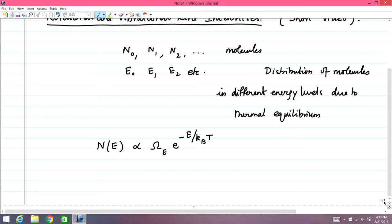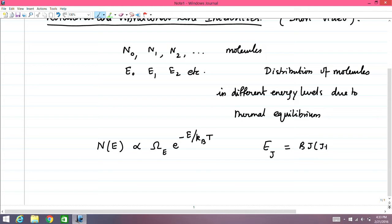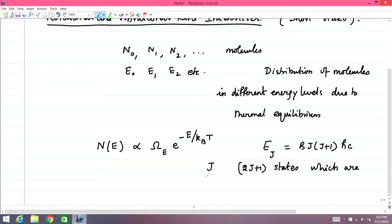In the case of rotational spectroscopy, the molecular energy levels for a simple diatomic system are proportional to J(J+1). Recall the energy level formula for rotation for quantum number J: it is B·J(J+1)·hc. The quantum number J corresponds to 2J+1 states, given by different values of the projection of J on the molecular axis — called the k quantum numbers — ranging from −J to +J in integer steps.